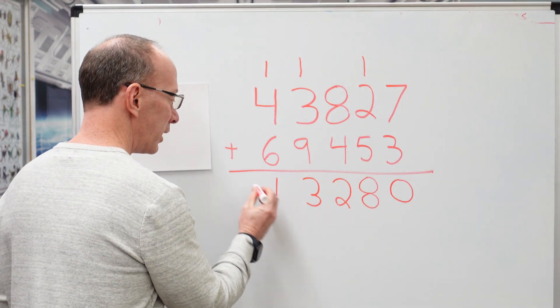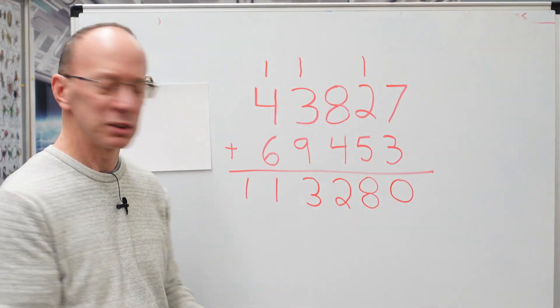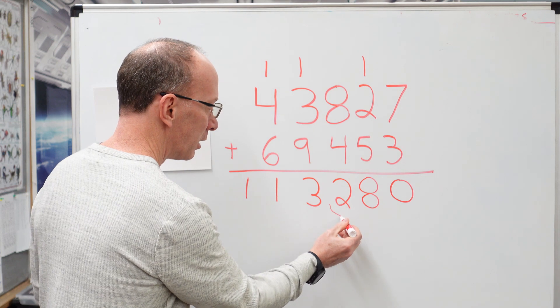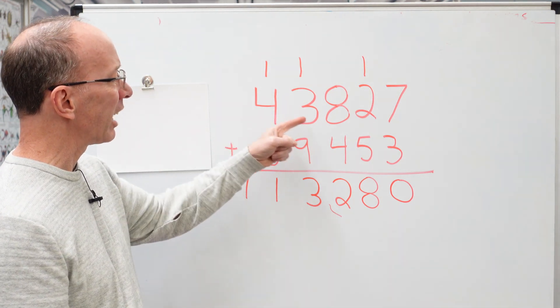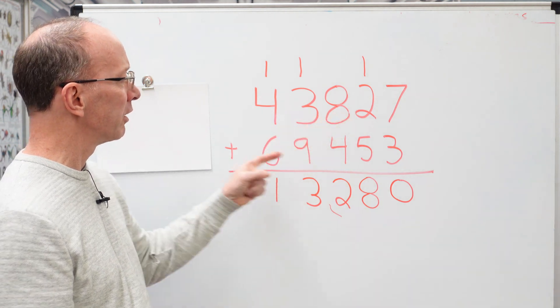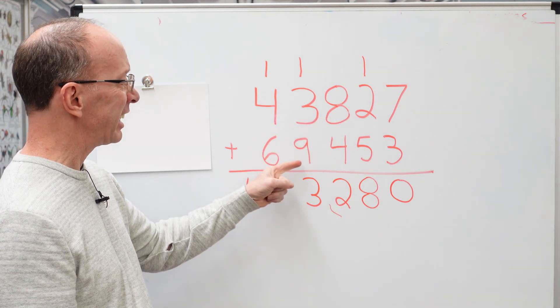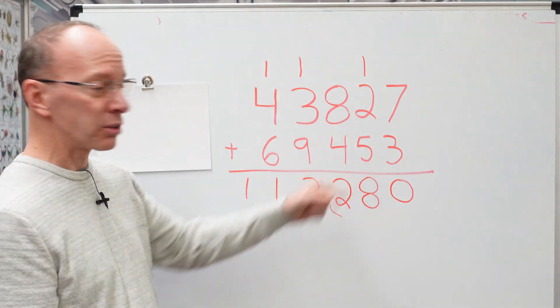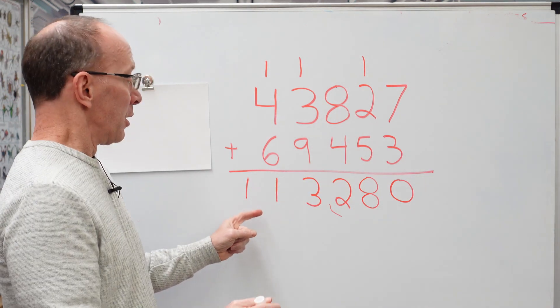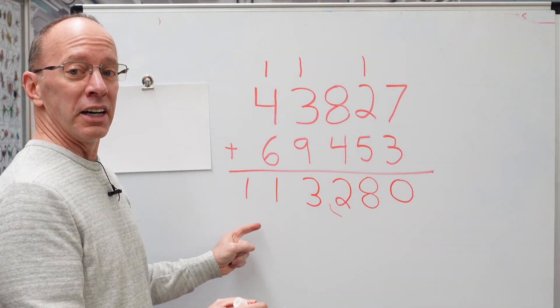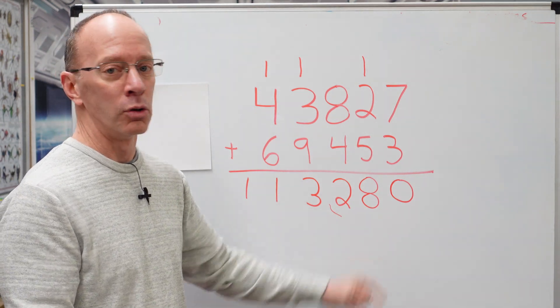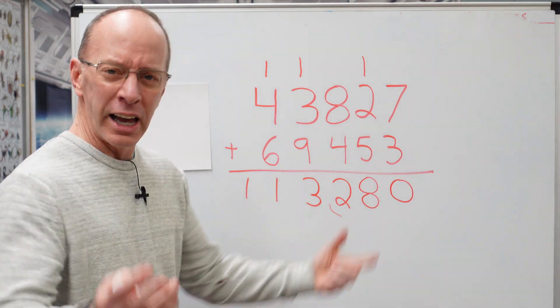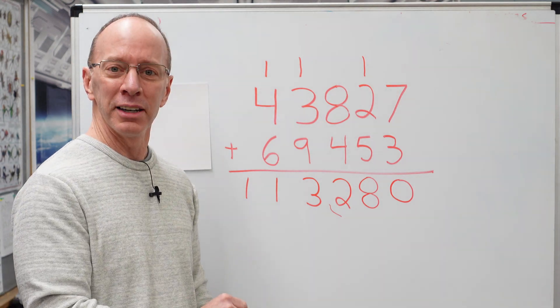So I'll put the one right here. And if you want to, you can put some commas in here to kind of break it up a little there. So we have 43,827 plus 69,453 equals 113,280. Oh, that's a mouthful. Hey, you ready to do another number? Let's do it. Yeah.